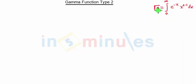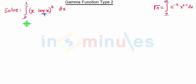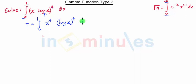In this question, our integration is from 0 to 1, but we need integration from 0 to infinity. Here we have a log x term, so due to the presence of the log x term, this is of Type 2. Our equation will be the integration of 0 to 1 — splitting the power — we get x raised to 4 times log of x, the whole raised to 4, times dx.